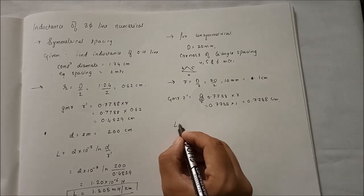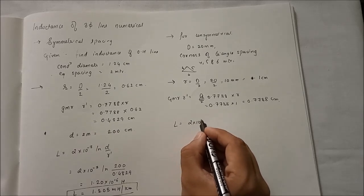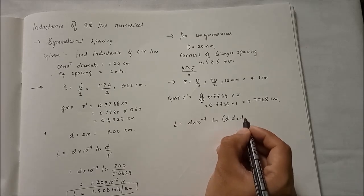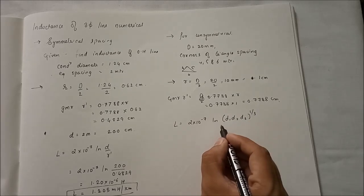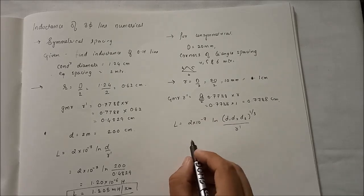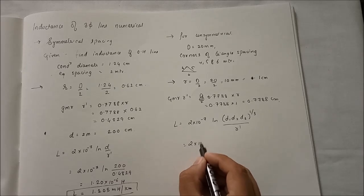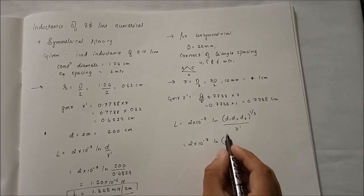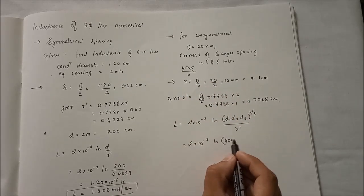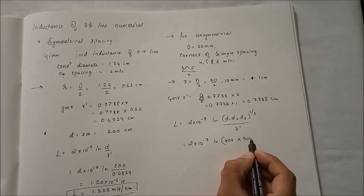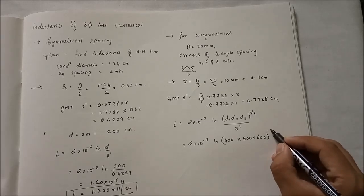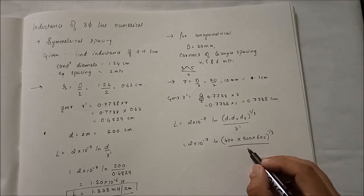Now we have the formula for unsymmetrical spacing, which is 2 into 10 to the minus 7, log D equivalent by R dash. D equivalent is equal to cube root of D1 into D2 into D3. Converting 1 by 3 divided by R dash.